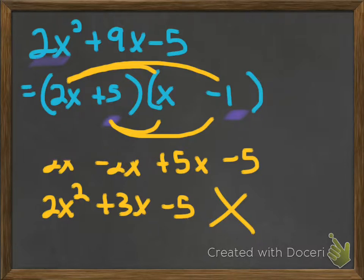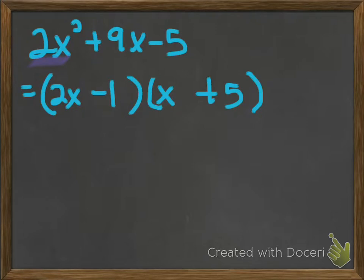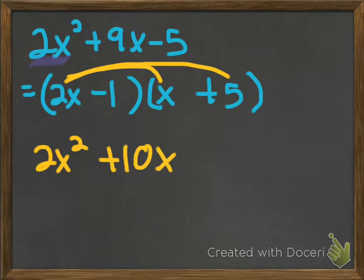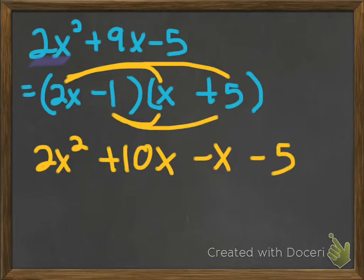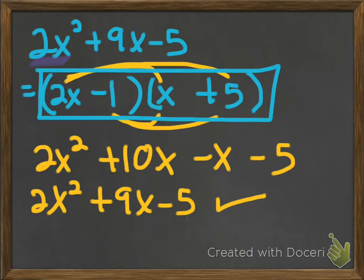When it doesn't work, let's just keep trying. The 5 and negative 1 didn't work in that order, so let's try switching them. Maybe I'll put the negative 1 here and the positive 5 here. When you're checking your work, you're just FOILing. I've got 2x squared. 2x times 5 gives 10x. Negative 1 times x gives negative 1x. Negative 1 times 5 gives negative 5. Combining those like terms, I got 2x squared plus 9x minus 5, which is the original. Since that was the original question, my answer is 2x minus 1 times x plus 5.